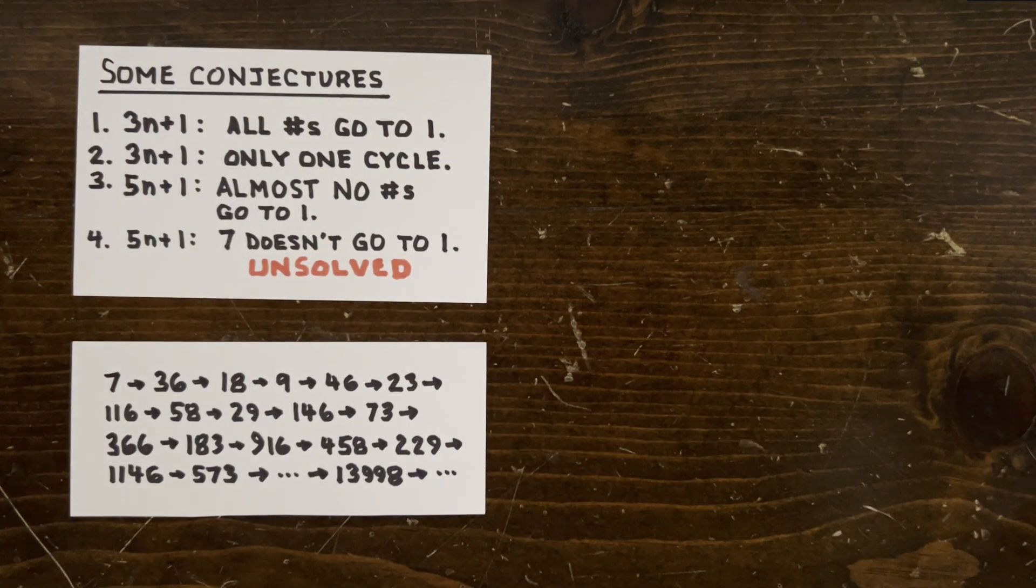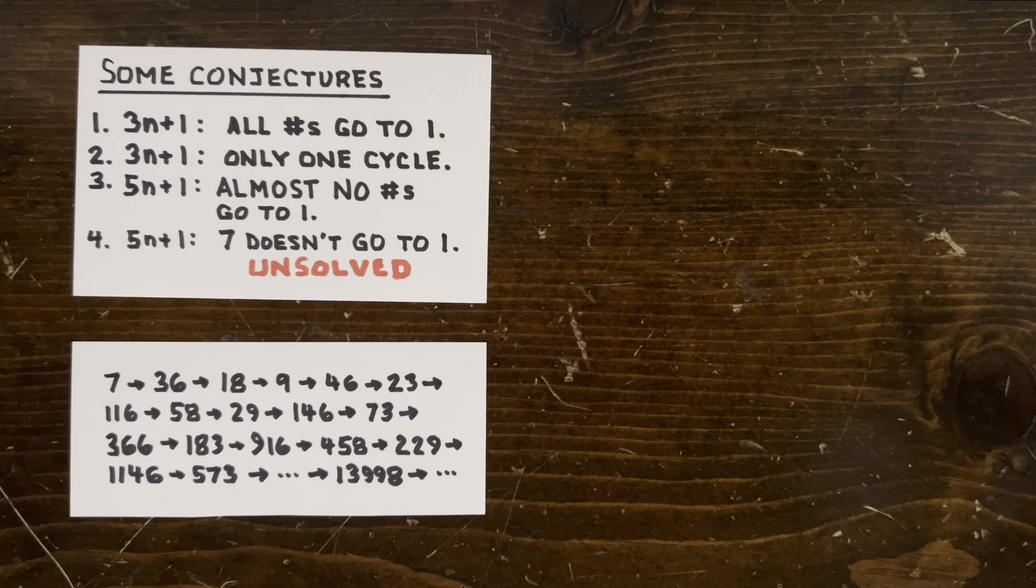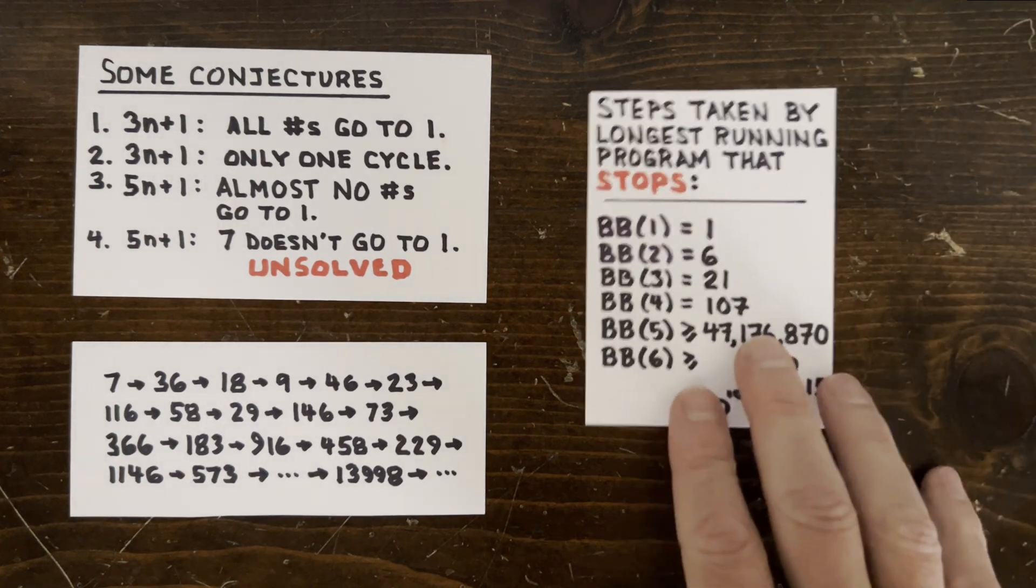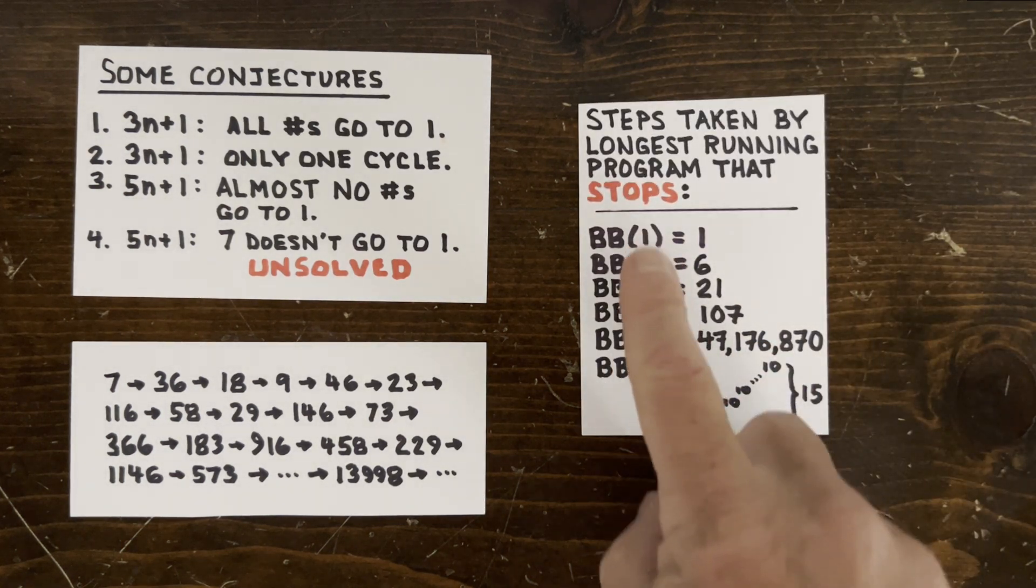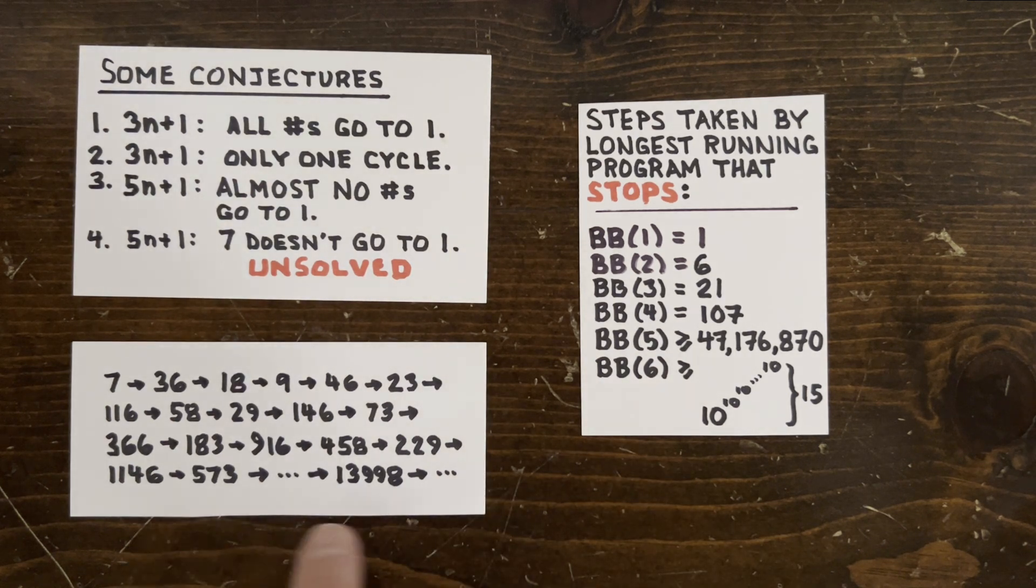Now, suppose we make an N-state Turing machine that halts if 7 does reach 1, which would refute this conjecture. If that machine runs for BB(N) steps without stopping, then it's never going to stop, confirming conjecture number 4.